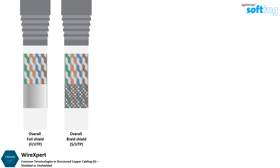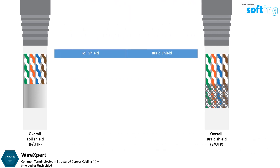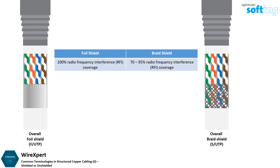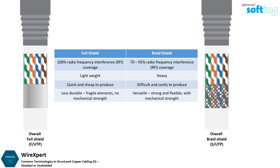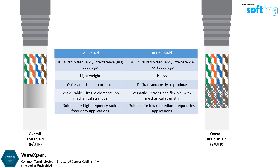There are a few main differences between braided and foiled shielding. Foil shielding offers 100% coverage and can stand up to high-frequency RFI applications. It is also lightweight and can be produced quickly at a lower cost. However, despite foil shielding's coverage and protection against radio frequency interference, it is not very durable and its elements are fragile with no mechanical strength. Braided shield provides greater versatility than foil shielding — it is strong and flexible, offering mechanical strength, and performs best at low to medium frequency applications.